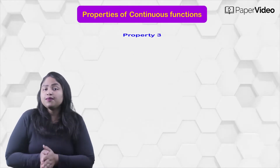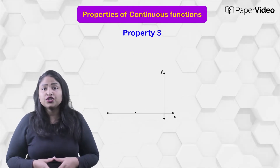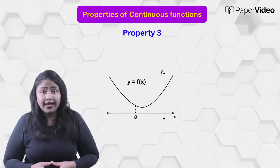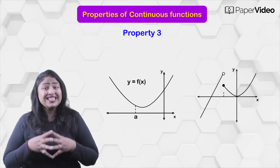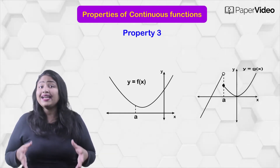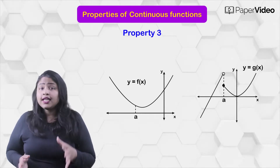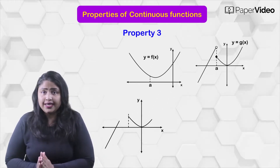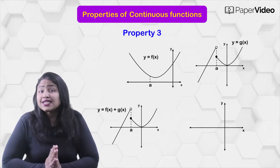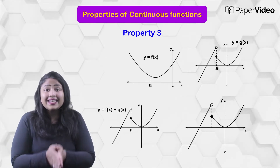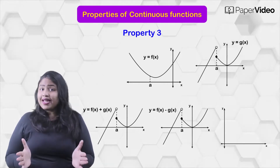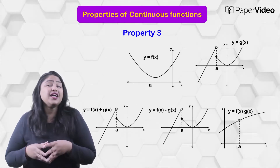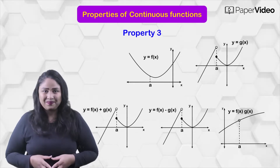According to the third property, if f is a function continuous at x equals to a and g is a function discontinuous at x equals to a, then the functions f plus g and f minus g are discontinuous at x equals to a, whereas the function fg may be continuous at x equals to a.